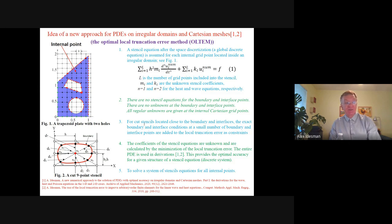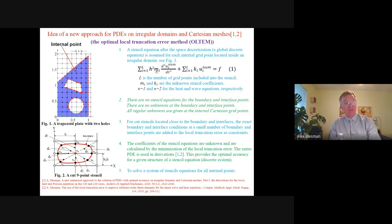For cut stencils located close to the boundary or interfaces, the exact boundary and interface conditions and a small number of boundary and interface points are added to the local truncation error as constraints. The unknown stencil coefficients will be calculated by the minimization of the local truncation error. In these derivations, the entire partial differential equation or system of PDEs will be used, and this provides optimal accuracy for a given structure of the discrete system. Finally, when we have all stencil equations with calculated stencil coefficients, we solve a system of stencil equations for all internal grid points.